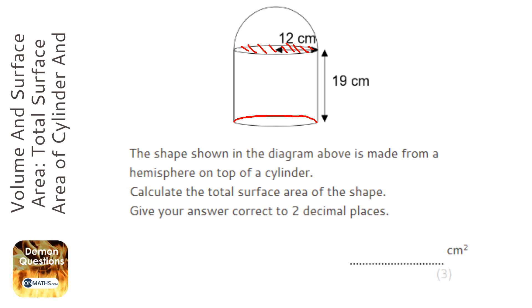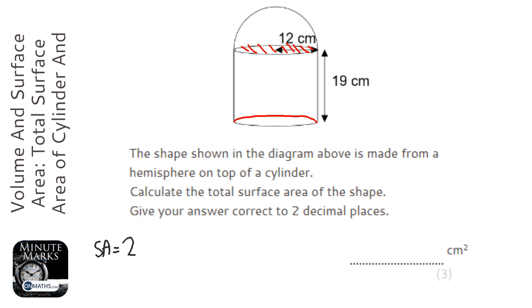I'm going to do this all in one. The surface area of a full sphere is 4πr², but because we've only got half a sphere, it's going to be 2πr².